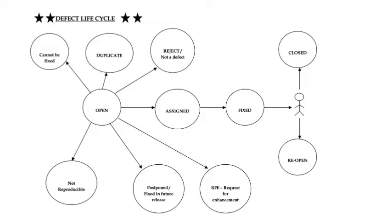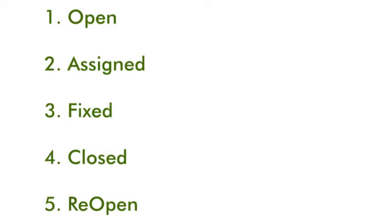These are a few stages of the software defect life cycle. Let's see them one by one. When the customer gives requirements, developers are developing the software and the testing team is writing test cases and looking at the requirements. The developer develops the product, the test engineer starts testing the product, and finds some defects. The test engineer then prepares a defect report and sends a mail to the development team saying the bug is open.